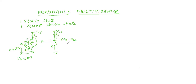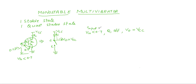That means when V input is less than 0.7, the collector and emitter terminals of Q1 will open and make Q1 be in OFF condition. Then output voltage is equal to VCC. So when input is equal to low voltage or 0, Q1 transistor will be OFF and the output voltage is VCC.